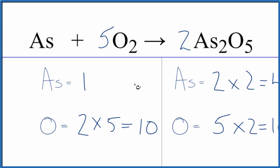And we said arsenic by itself, so we can just put a four here. One times four gives us four arsenic atoms. And we're done. This equation is balanced.